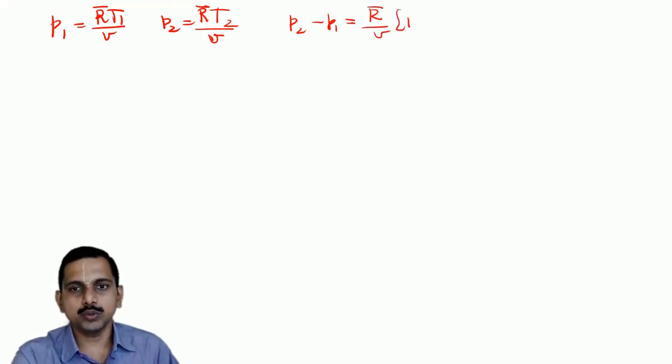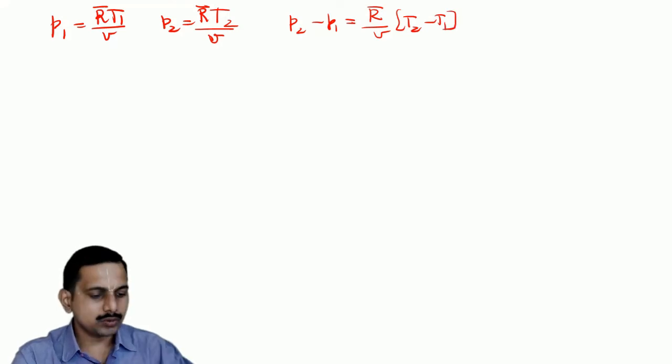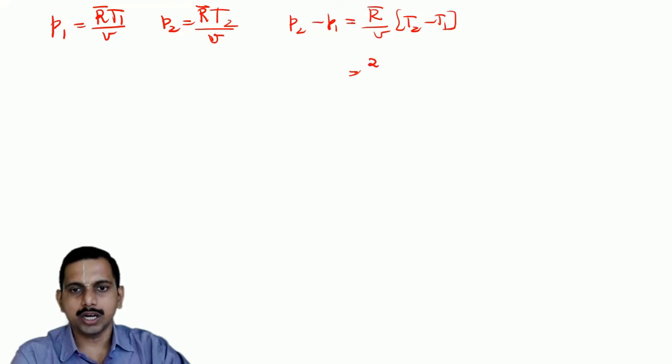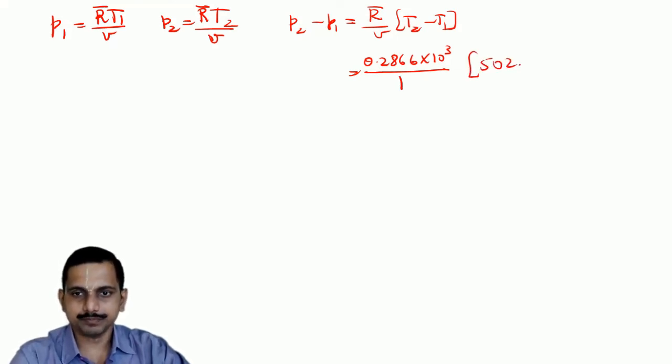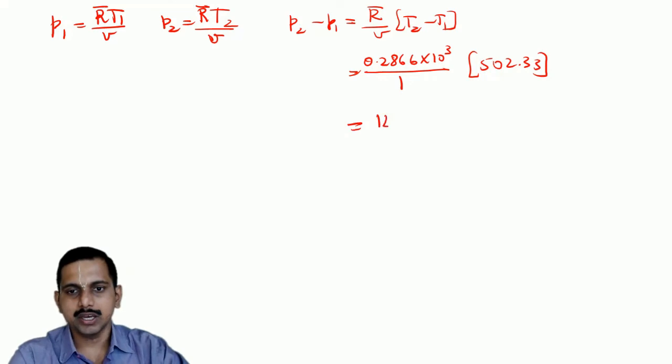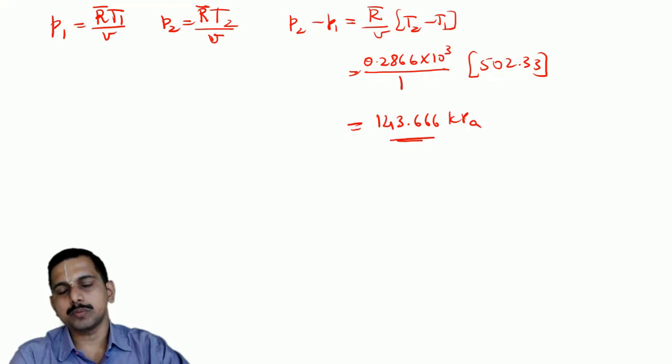We substitute the values. R is 0.2866 × 10³ divided by specific volume of 1. The temperature change is 502.33, so P2 minus P1 equals 143.66 kPa. This is the answer: 143.66 kPa.